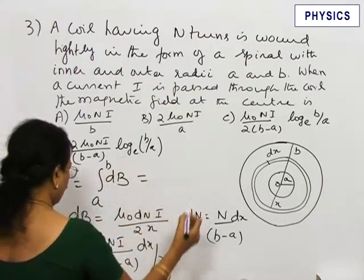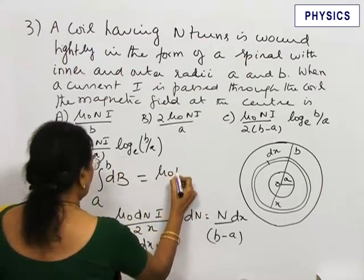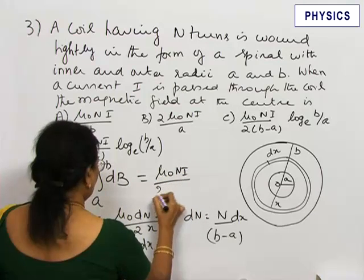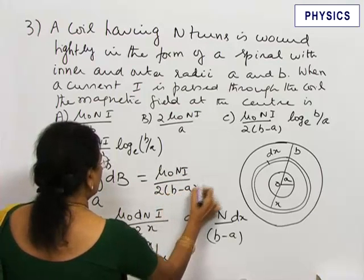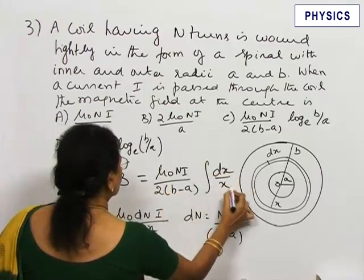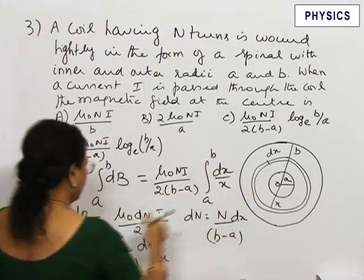This equals mu naught n i by 2 B minus A, integral dx by x between A to B.